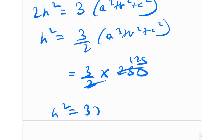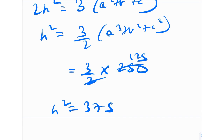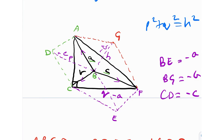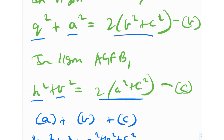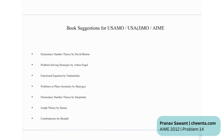That's probably the best solution to this problem — it uses geometry, vectors, and complex numbers together, which makes it elegant. We looked at three solutions: the quick cheat approach, the algebraic solution, and this beautiful geometric one. For further reading, recommended books include: Elementary Number Theory by David Burton, Problem Solving Strategies by Arthur Engel, Functional Equations by Venkata Chala, Problems in Plane Geometry by Sharygin, Elementary Number Theory by Sierpinski, Graph Theory by Harary, and Combinatorics by Vilenkin.